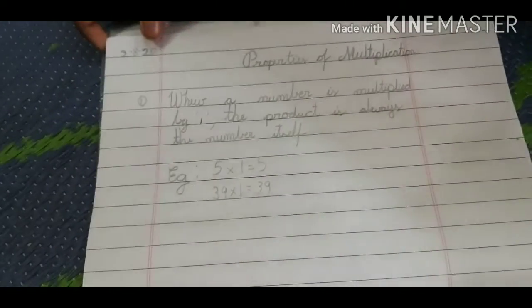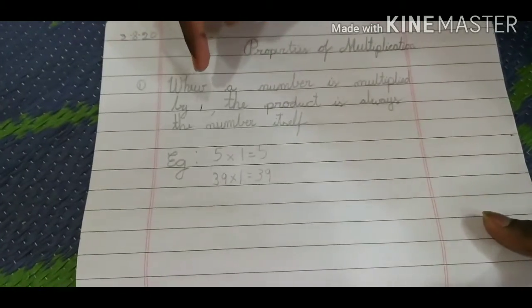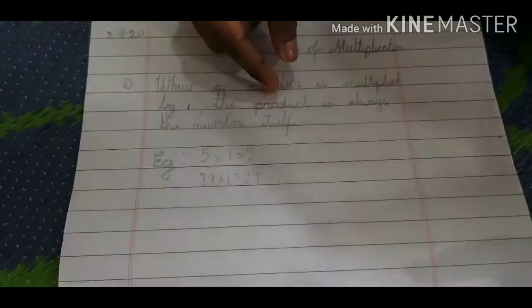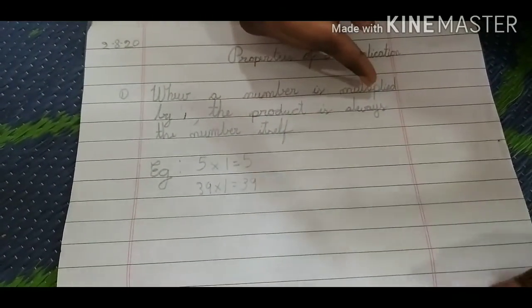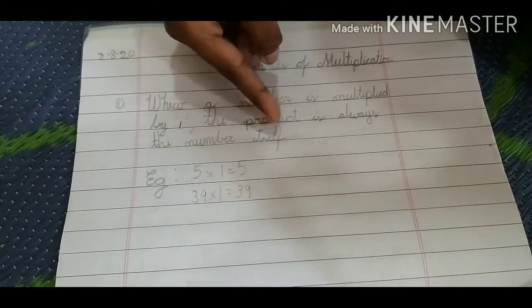First of all we are going to discuss properties of multiplication. The first property is when a number is multiplied by one, the product is always the number itself.